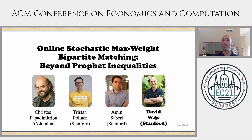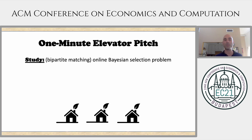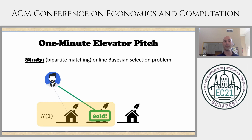I'll spare you the title but instead I'll give you a sense of what's going on here. What we study in this paper is an online Bayesian selection problem under bipartite matching constraints. We have a two-sided matching market with houses on one hand and buyers on the other, who show up over time and make take-it-or-leave-it offers for some subset of the houses. They want maybe one of the first two houses, so maybe we sell the second.